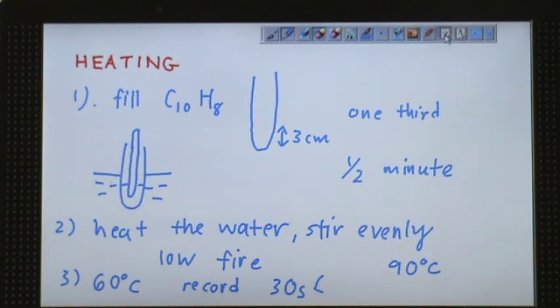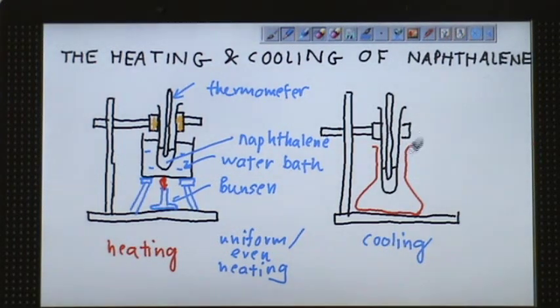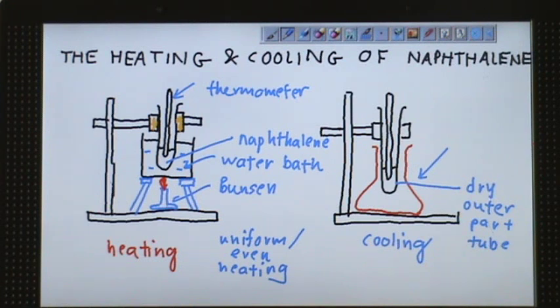For cooling, let's look back at the diagram. We pour out the water, take a new beaker, and clamp the boiling tube with the naphthalene substance and thermometer. Before you put it inside, make sure you dry the outer surface of the boiling tube with a piece of cloth. Putting this test tube or boiling tube into the conical flask helps give uniform cooling. This is the conical flask, not a beaker.